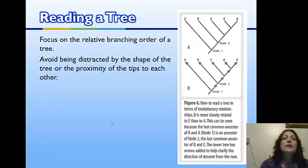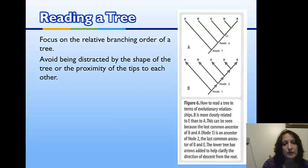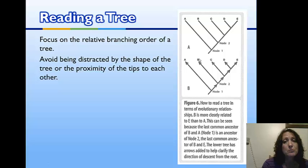When looking at traits, make sure you're looking at the branching — at these nodes. This is what's most important. Don't be distracted by the shape or orientation of the tree, and also don't be distracted by the location of the organisms at the tips.